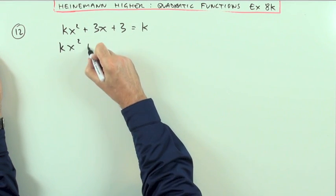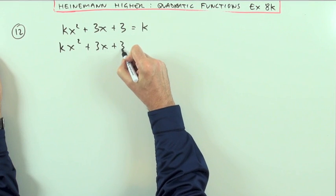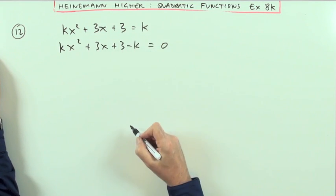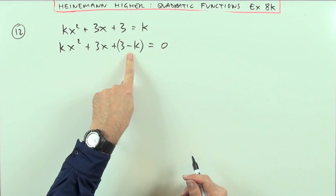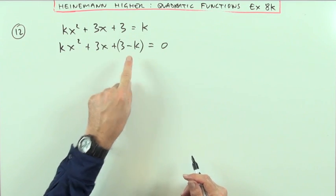I need to put kx squared plus 3x plus 3 minus k equals 0, and maybe I'll just put those bits together to emphasize the c part of it: a, b, c.